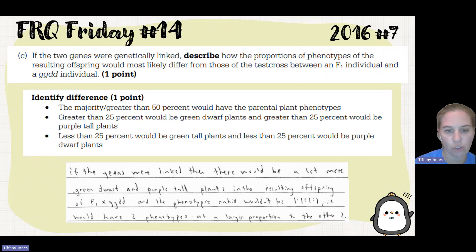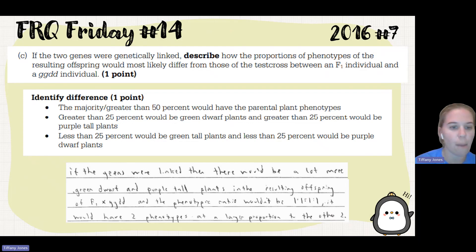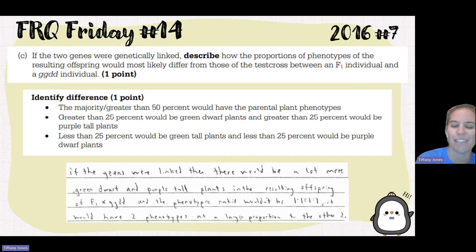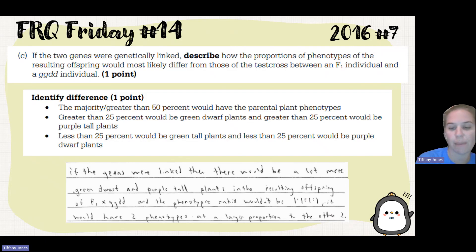The student's answer: if the genes were linked, there would be a lot more green dwarf and purple tall in the resulting offspring of the F1 and homozygous recessive cross. The phenotype ratio would no longer be 1:1:1:1 — instead, two phenotypes would appear in a large proportion relative to the other two.